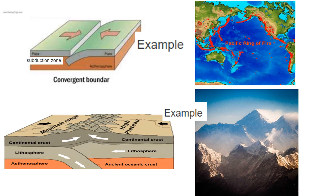Another thing that can happen when two plates press against one another in a convergent boundary is that the rock above the boundaries will be lifted up and folded in the form of mountains. The Himalayas are an example of two tectonic plates colliding. As the plates continue to move, the peaks of the mountain range continue to grow. For example, Mount Everest currently measures around 29,000 feet, and it grows close to an inch per year — so thousands of years are required to form these mountains.